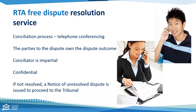If the matter is resolved, the conciliator will put it in writing and get everyone to sign the result, or they may sign a refund form if it's bond related. If the matter is unresolved, a notice of unresolved dispute is issued and the person who lodged the dispute request form will receive that notice to pursue it directly to the tribunal.